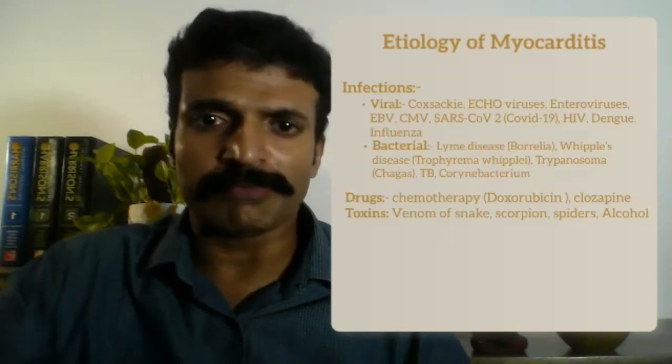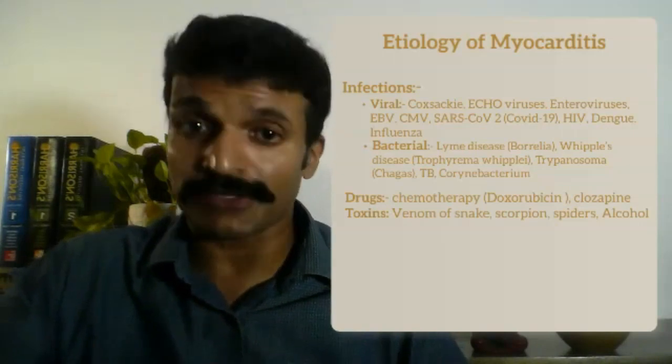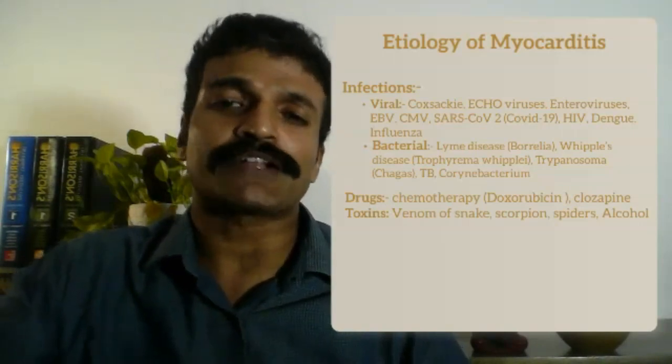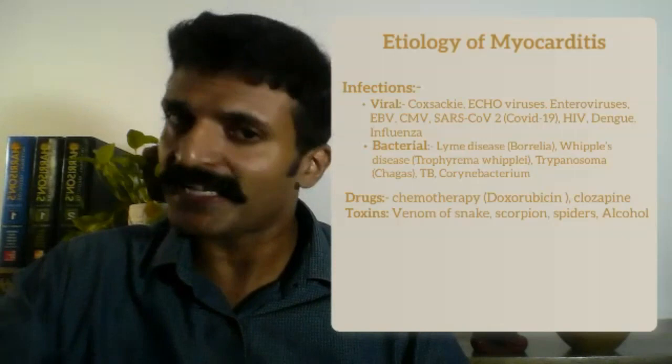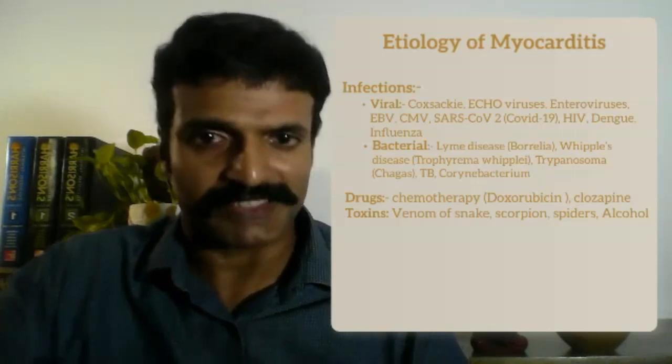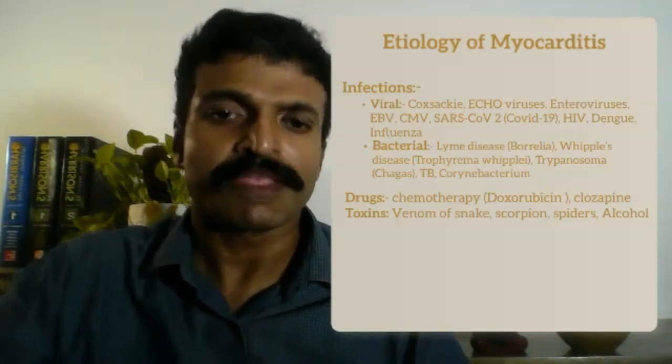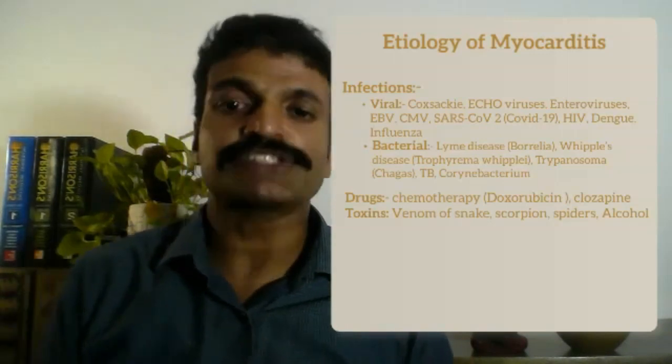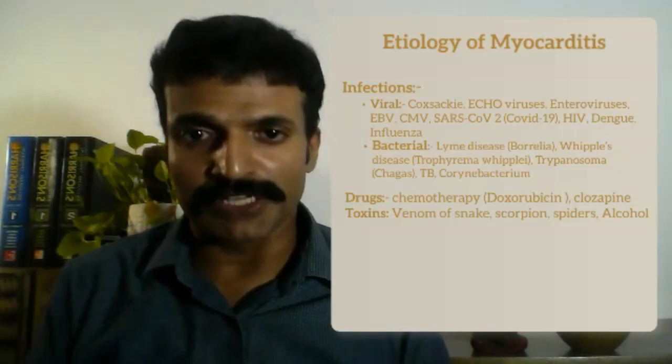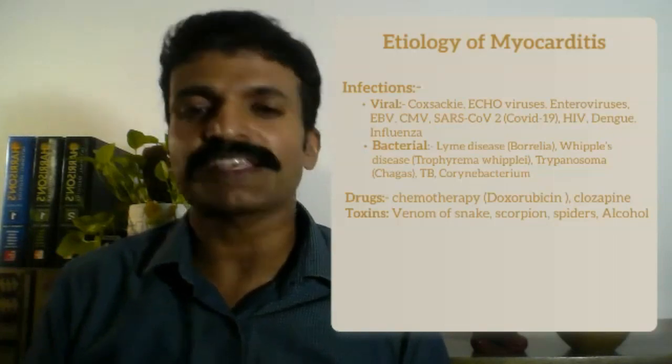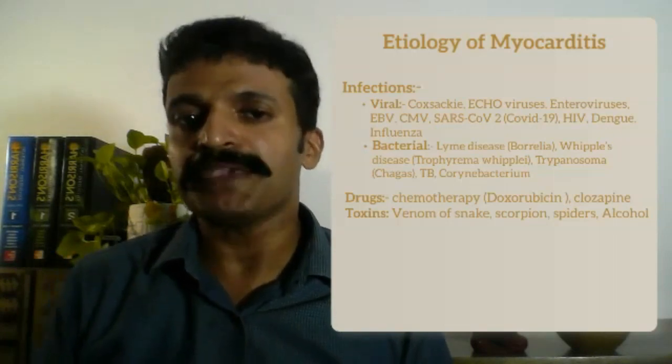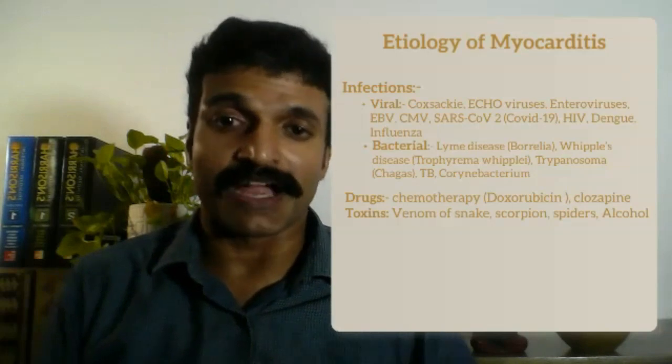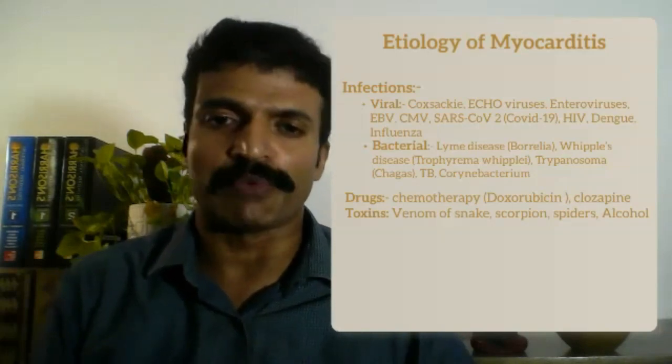Toxins - the most commonly common cause that we usually see is alcohol. Long-term use of alcohol can produce myocarditis as well as cardiomyopathy, which we will discuss later. In India, particularly snake bites and scorpion stings are a common cause. Scorpion stings in small children can be a cause of myocarditis and heart failure that you need to be aware of.